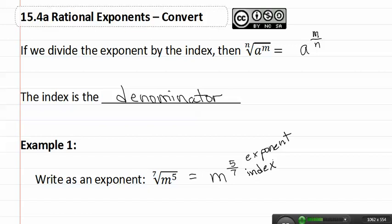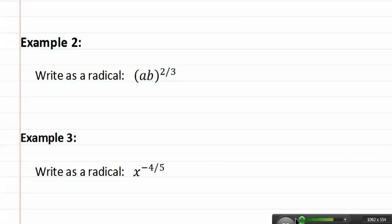Let's look at another example. In example two, it asks us to go the other way and write this as a radical. To write this as a radical, remember the denominator is the index. This means that I have a cubed root of ab that is being squared.